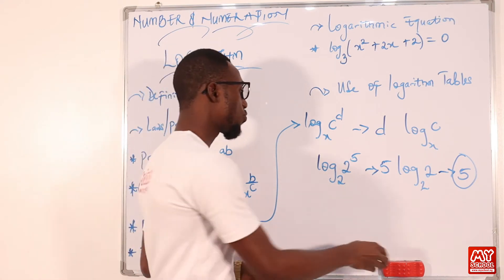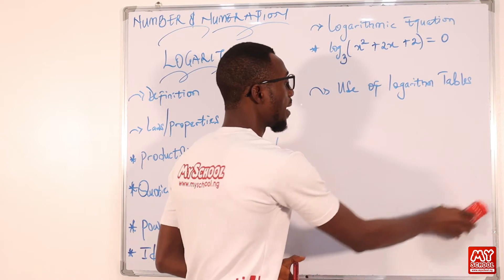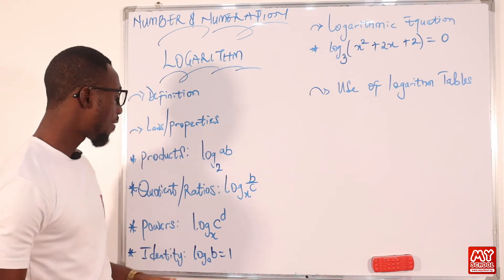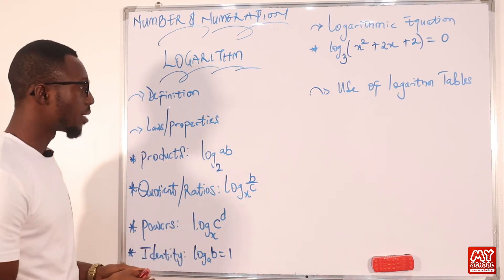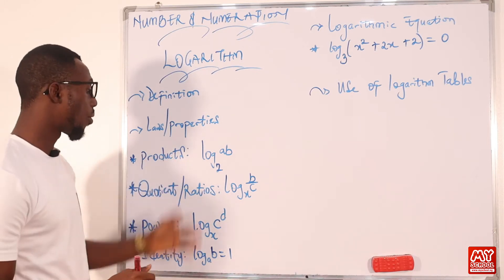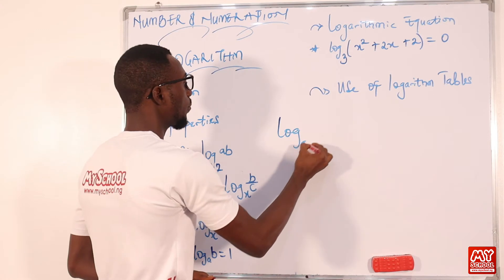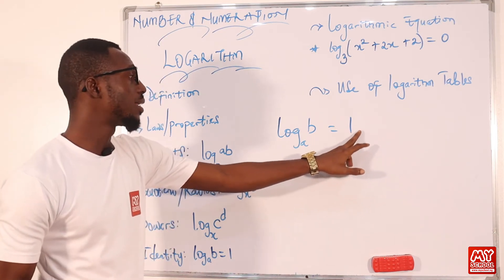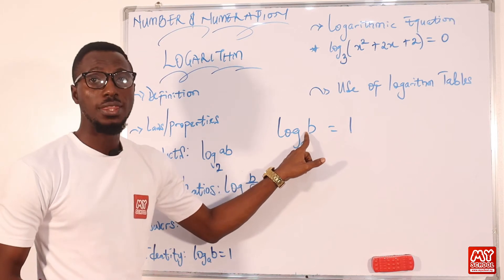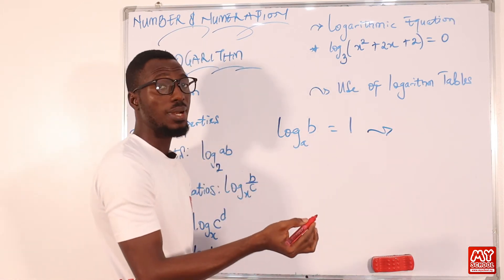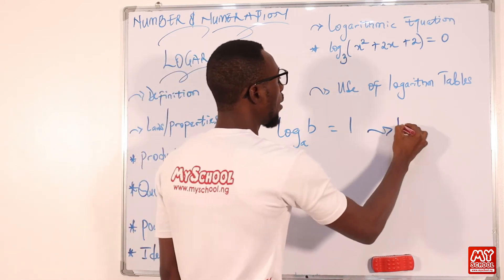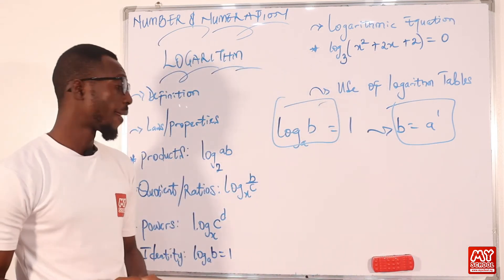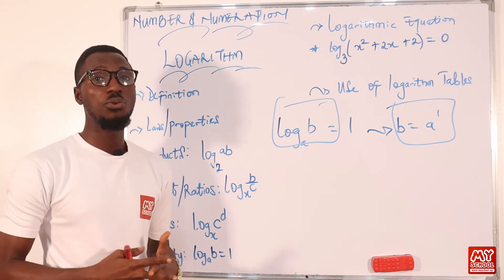The fourth law is the identity property. This is very easy, just like the way we used it to define logarithm. The output we get here as 1 is the index to which the base must be raised to give you the same number — meaning log base a of a = 1. In exponent form, this is: b = a raised to power 1. We still have more laws to tackle in the fuller session of this video.